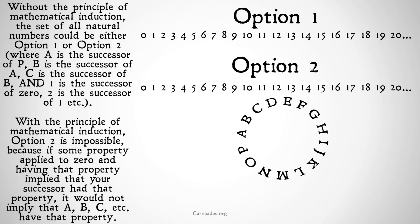But with the principle of mathematical induction, option two is impossible. Because if some property applied to zero, and having that property implied that your successor has that property, it wouldn't imply that A, B, or C, etc., have that property. That process — zero has it, and all the successors of zero have it — only means that every number in that top number line has it. A is not the successor of zero, or any successor of a successor of zero, and so that separate circle would never get hit by that domino line of mathematical induction. Option two cannot be what we're describing; the only thing we could possibly be modeling is option one, the line of natural numbers, which is exactly what we are trying to describe.